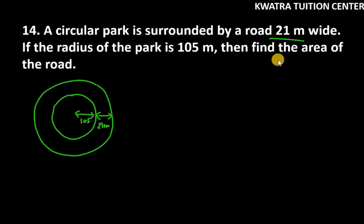Now it says find the area of the road, that means we have to find this area. So what you need to do is take the area of park and road. We have to consider this whole area.